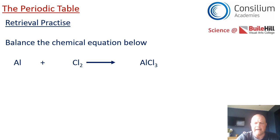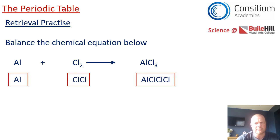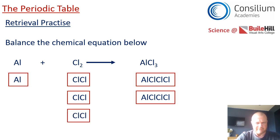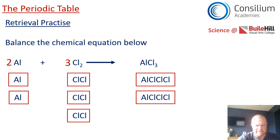So Al plus Cl₂ makes AlCl₃. The first thing we need to do is write down what we've got in the boxes. I've got an Al, I've got two Cls in a box, and I've got Al and three Cls in the other box. Remember, you can only add a box at a time. On the right hand side I've got three Cls but on the left hand side of the arrow I've got two, so I'm going to add another one. Now I've got four Cls on the left hand side but only three on the right, so I need another box on the right hand side. Now I've got six Cls on the right hand side in total and two Als. If I add another box of Cls, now I've got six of them, and if I add another box of Al, I've got two of them. So now I've balanced the equation and all I have to do is put the numbers back into the original equation: two boxes of Al, three boxes of Cl₂, and two boxes of AlCl₃.